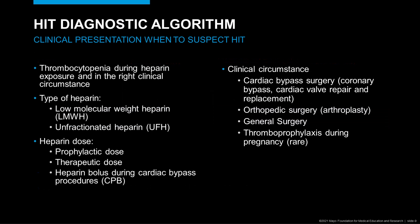HIT should be suspected in patients on heparin therapy who develop thrombocytopenia. It can occur in those receiving both low molecular weight heparin and unfractionated heparin, but the incidence is higher in those on unfractionated heparin. HIT occurs in those on prophylactic and therapeutic doses of heparin. The highest risk appears to be in patients receiving heparin boluses during cardiac bypass procedures, with the second most common situation being orthopedic surgery such as joint arthroplasty. Less commonly, HIT can occur in general surgery patients, and rarely in those receiving thromboprophylaxis for medical indications or during pregnancy.